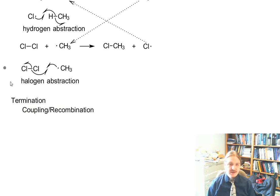And these will tend to be, most of them, not very productive. There is one coupling step that is productive, and that is the coupling of chlorine radical and methyl radical to form the intended product, chloromethane.